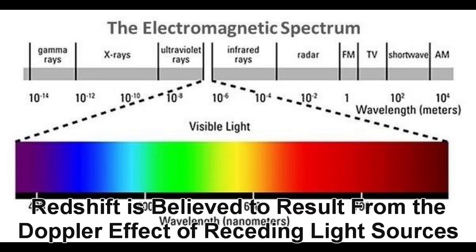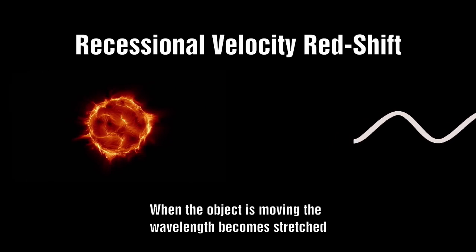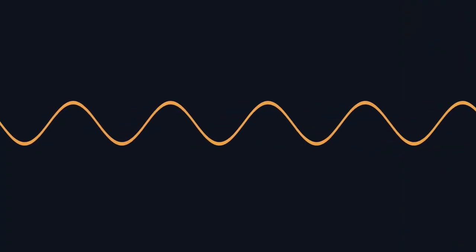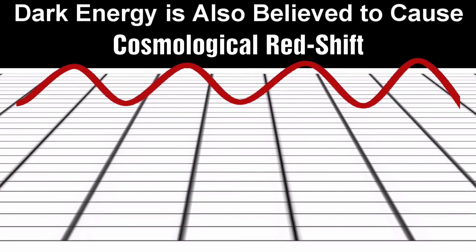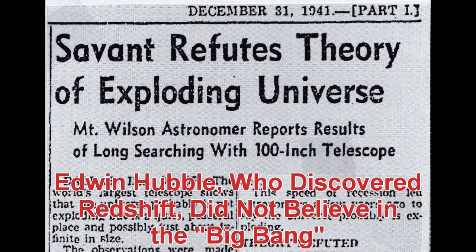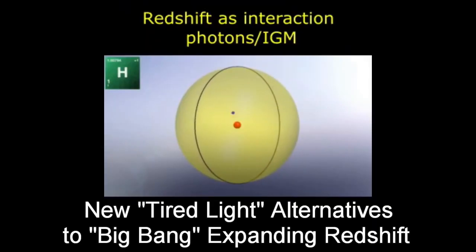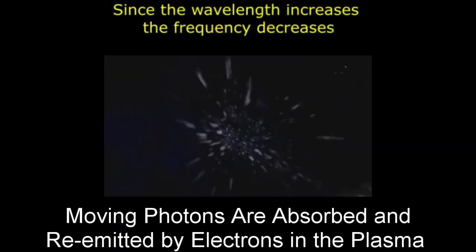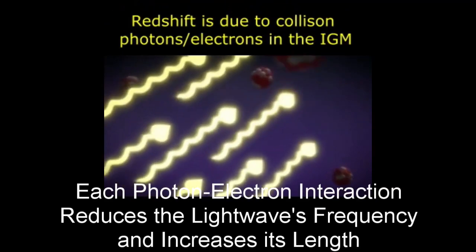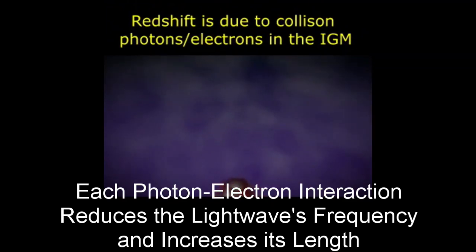Redshift is believed to result from the Doppler effect of receding light sources — recessional velocity redshift — when the object is moving away and the wave becomes stretched. Dark energy is also believed to cause cosmological redshift. Edwin Hubble, who discovered redshift, did not believe in the Big Bang. Under the new tired light alternative to Big Bang expanding redshift, moving photons are absorbed and re-emitted by electrons in the plasma, and each photon-electron interaction reduces the light wave's frequency and increases its length.